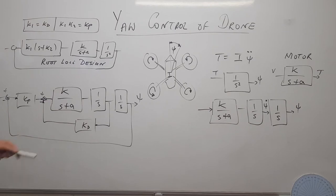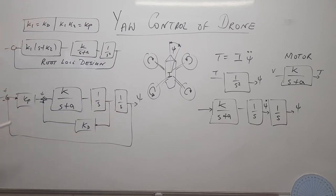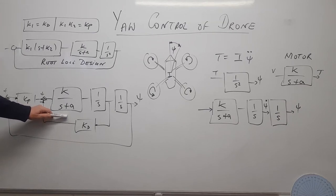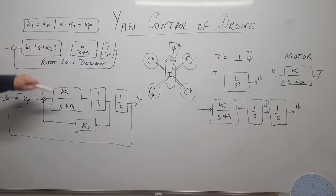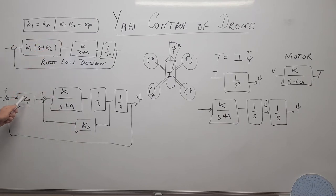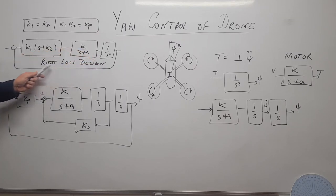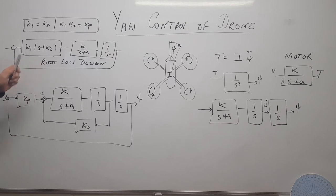The control system we're implementing is a proportional-plus-derivative controller. Because this doesn't lend itself well to root locus design, we repose the problem in the standard form k1·s + k2, which lets us use root locus design methods to find k1 and k2. From those, we recover kd = k1 and kp = k1·k2.